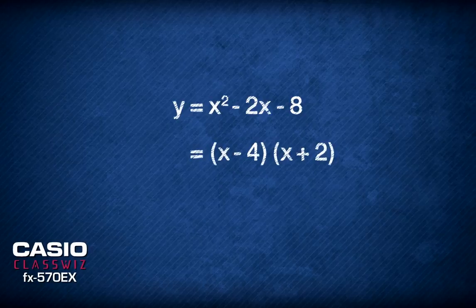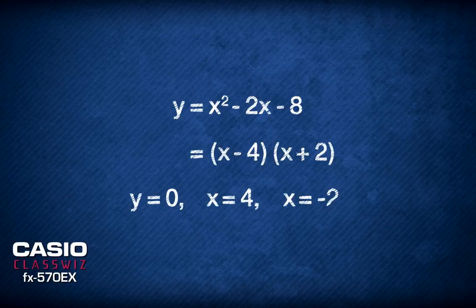From the factorized form, we are able to determine the roots of the curve to be x equals 4 and x equals negative 2.